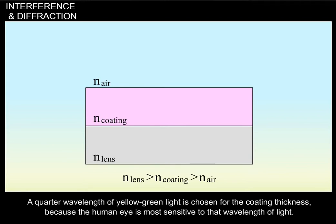A quarter wavelength of yellow-green light is chosen for the coating thickness, because the human eye is most sensitive to that wavelength of light.